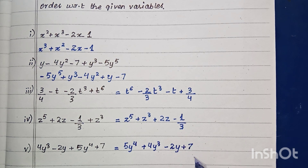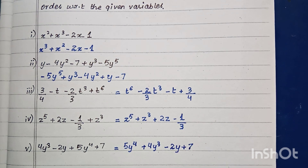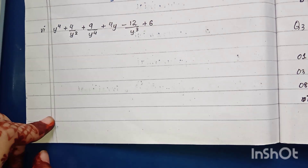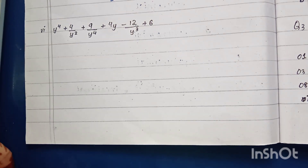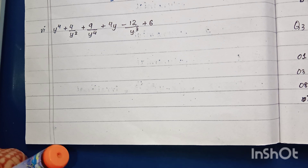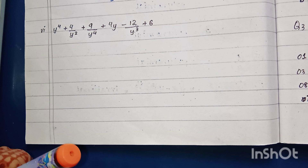Now come to part six. The variables are given in negative form — they are in the denominator. When we bring these variables above, the power sign changes to minus.